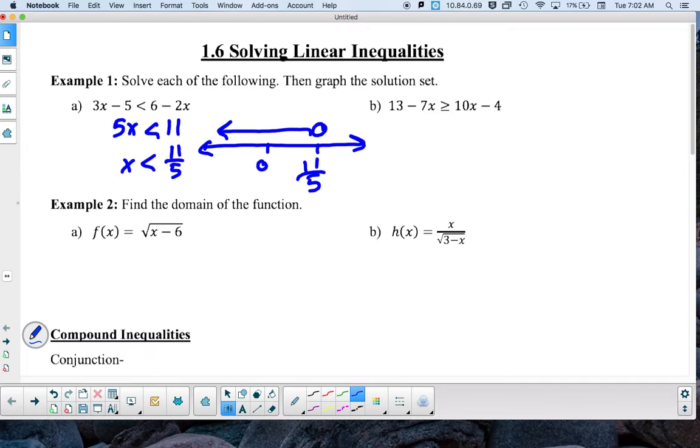And so for b, we're going to solve it the same way. So I'm going to subtract 10x from both sides, so I have negative 17x is greater than or equal to, and then subtract 13 from both sides, so negative 4 minus 13 is negative 17.